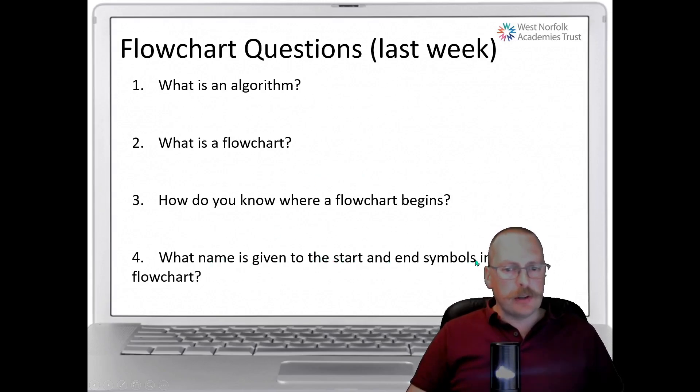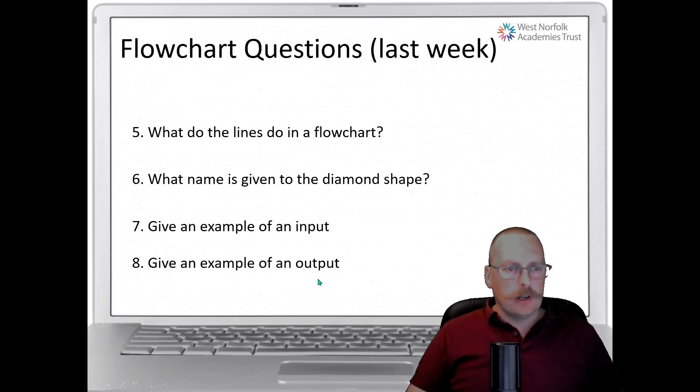What name is given to the start and end symbols in a flowchart? Well these are terminals and what the lines do in a flowchart is they show the direction of flow. There are lines in here but they need the little arrow shape on them to show which way around they go. What name is given to the diamond shape? Well this is an if decision. So I'd have accepted if statement or decision in your answer.